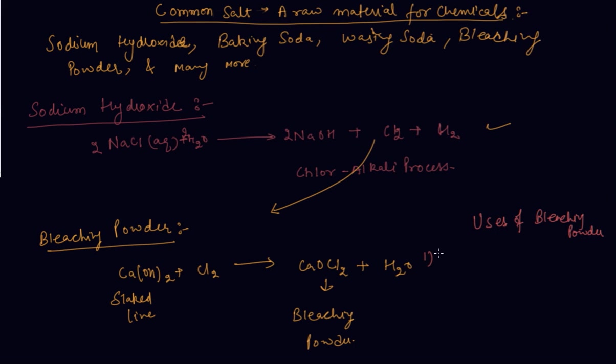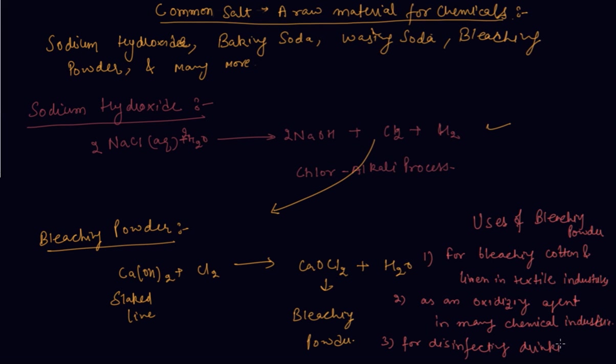Uses of bleaching powder. First, for bleaching cotton and linen in the textile industry. Second is as an oxidizing agent in many chemical industries. Third, for disinfecting drinking water.